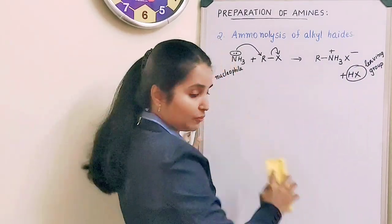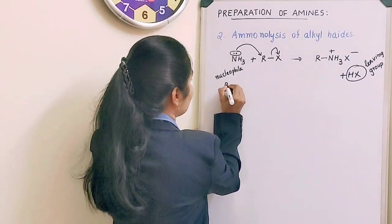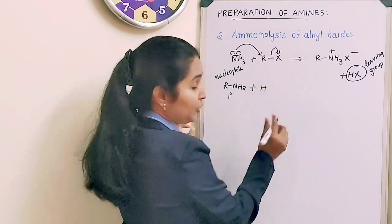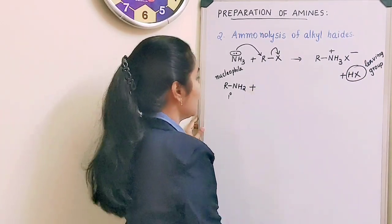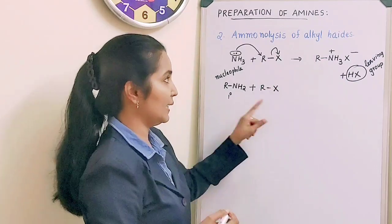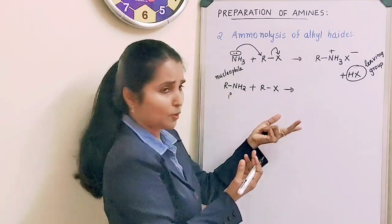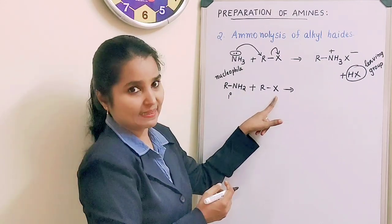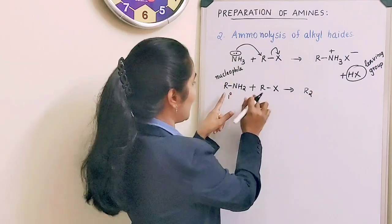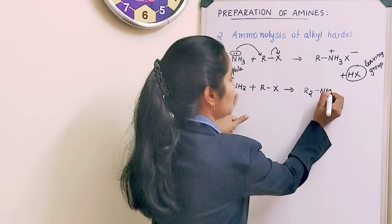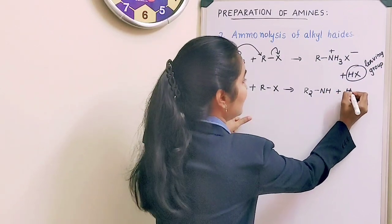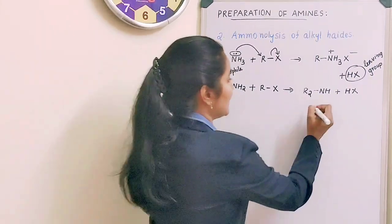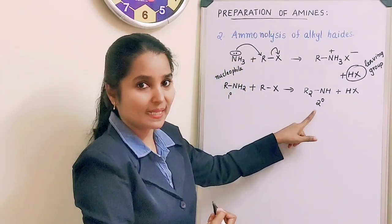The primary amine R-NH₂ formed can again be treated with alkyl halide (RX). Following the same procedure, R joins and one H leaves with X as HX. What you get is R₂NH — a secondary amine.